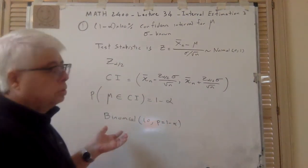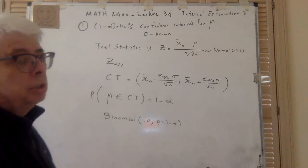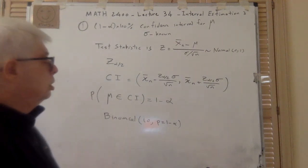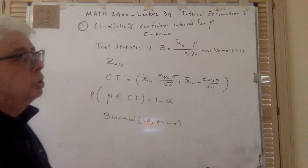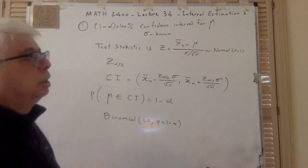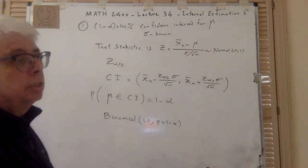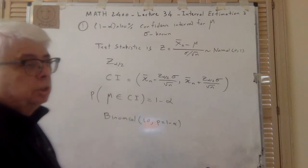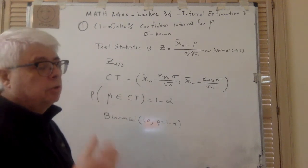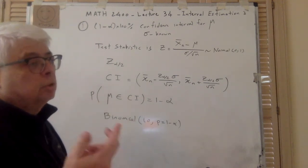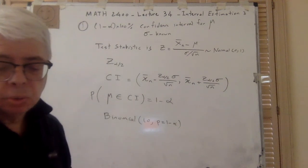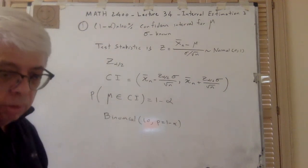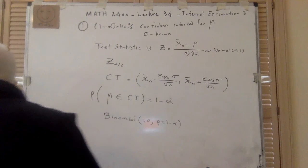You can now answer questions like: if we do the experiment 10 times, what is the probability that 5 times out of that μ falls within this interval? So 5 out of 10 we are successful. That is the situation.